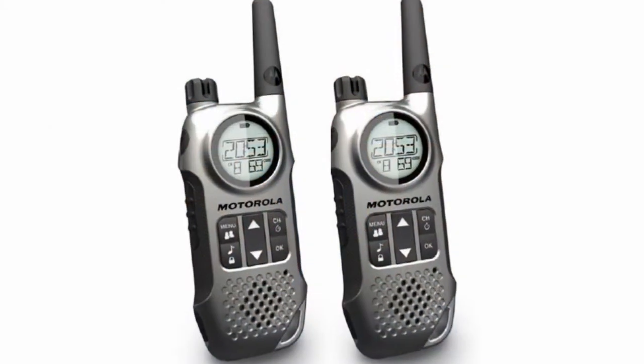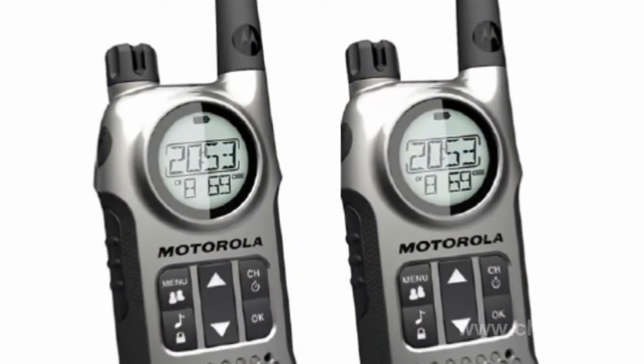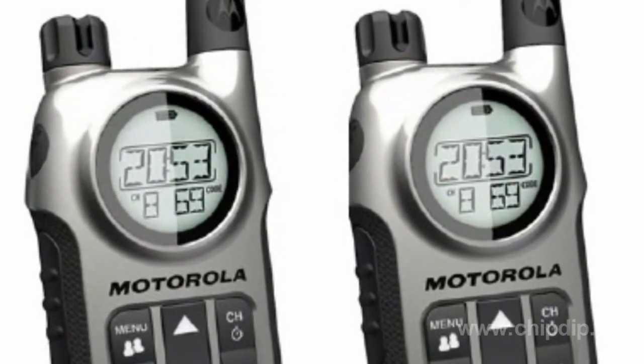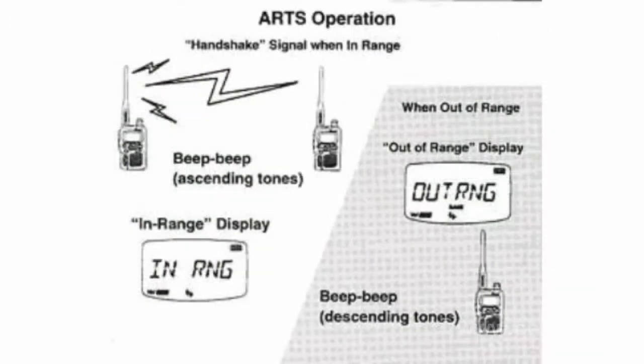The noise reduction system with prolonged tone code and signal identification, working under its own principle, is designed to separate several users operating at one frequency range into groups. When using this system, you need to enter certain code numbers into the radio stations. If the same codes are assigned to two portable radio transmitters, the first one will send the pilot tone with this code together with the transmitted speech. The second one will receive and recognize its own code, open the noise reduction device, and you will hear the party.